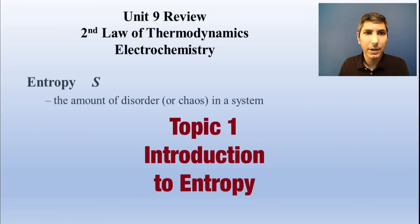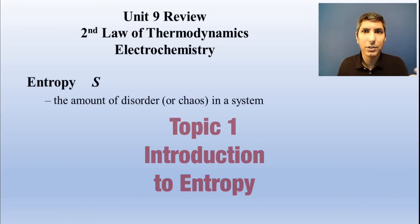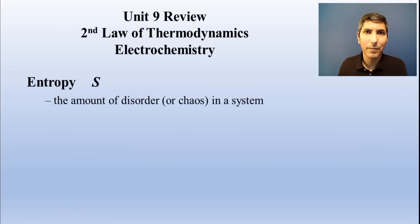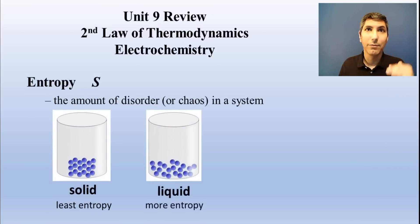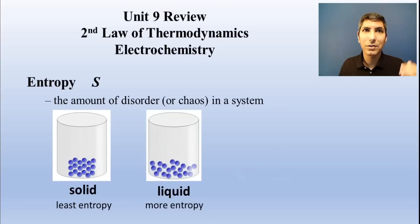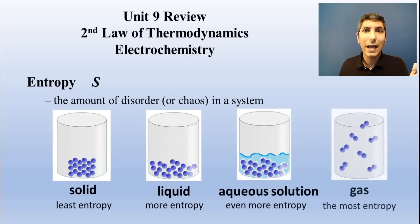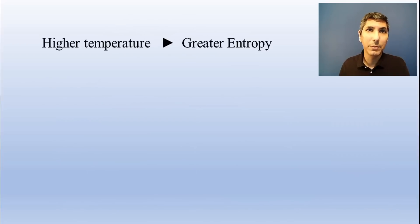We often describe entropy as the chaos or disorder of the molecules in a system. Since solids have relatively little chaos, they have the lowest entropy. Liquids have more entropy, aqueous solutions have even more entropy, and gases have the highest entropy. When you raise the temperature of a material, its molecules move faster, so that's more entropy as well. When you increase the volume for a gas, the molecules have more space to move around, so that's more entropy too.